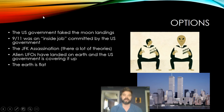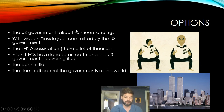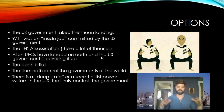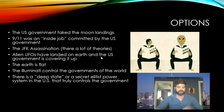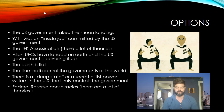Option five: the Earth is flat — Flat Earth theory. You can research that. Option six: the Illuminati control the governments of the world. Option seven: there's a deep state — a relatively new conspiracy theory, at least that I'm aware of. This theory says there's a secret elitist power system in the U.S. that truly controls the government — that the government on the outside is not the true government, and that a deep state of elitist individuals are making the true decisions. Option eight: Federal Reserve conspiracies. There are a ton of conspiracy theories about the Federal Reserve and their influence over our economy and government, because the Federal Reserve is technically not a government bank — they're technically independent — and that has created all these conspiracy theories.